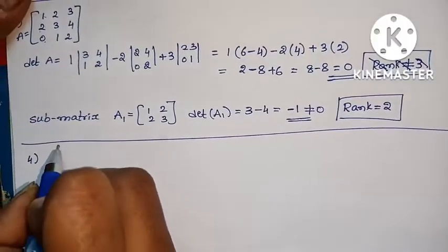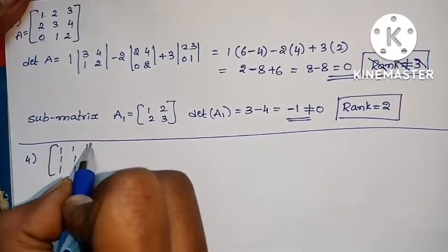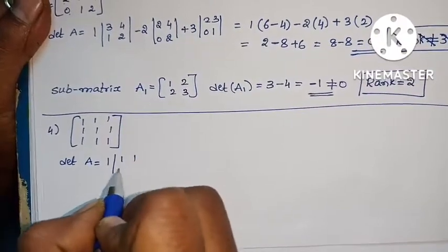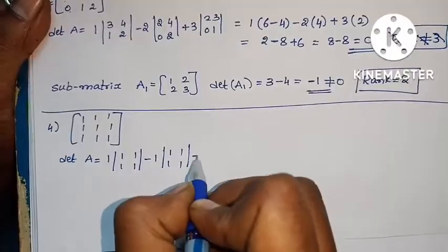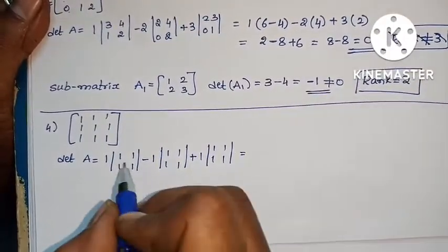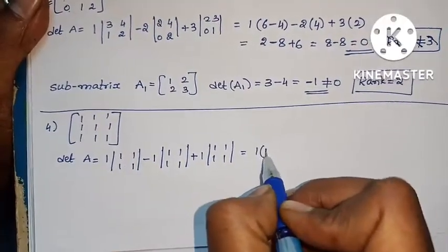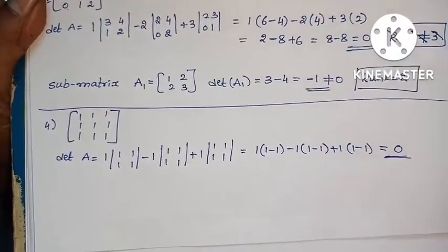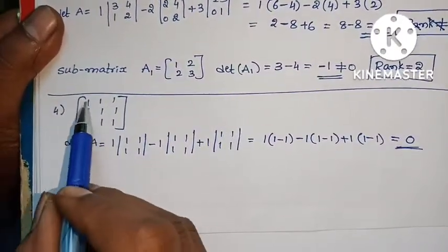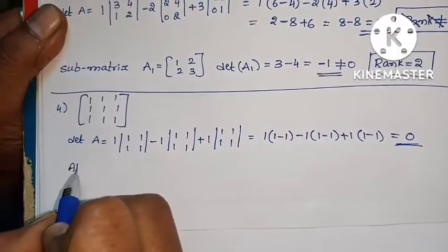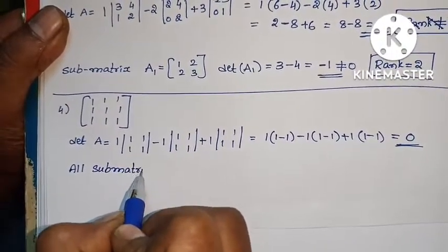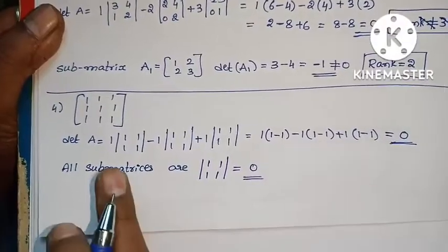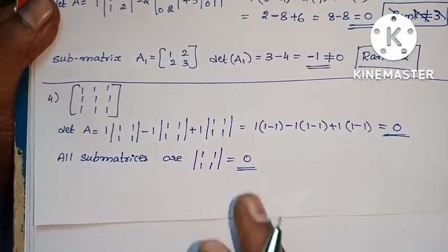Fourth problem — the matrix is all ones: [1,1,1; 1,1,1; 1,1,1]. det = 1 into det of [1,1;1,1] minus 1 into det of [1,1;1,1] plus 1 into det of [1,1;1,1]. Each 2x2 determinant gives 1×1 - 1×1 = 0. So det = 1×0 - 1×0 + 1×0 = 0. Now all 2x2 sub-matrices are of the form [1,1;1,1], and their determinant is also 0. All sub-matrix determinants are 0.